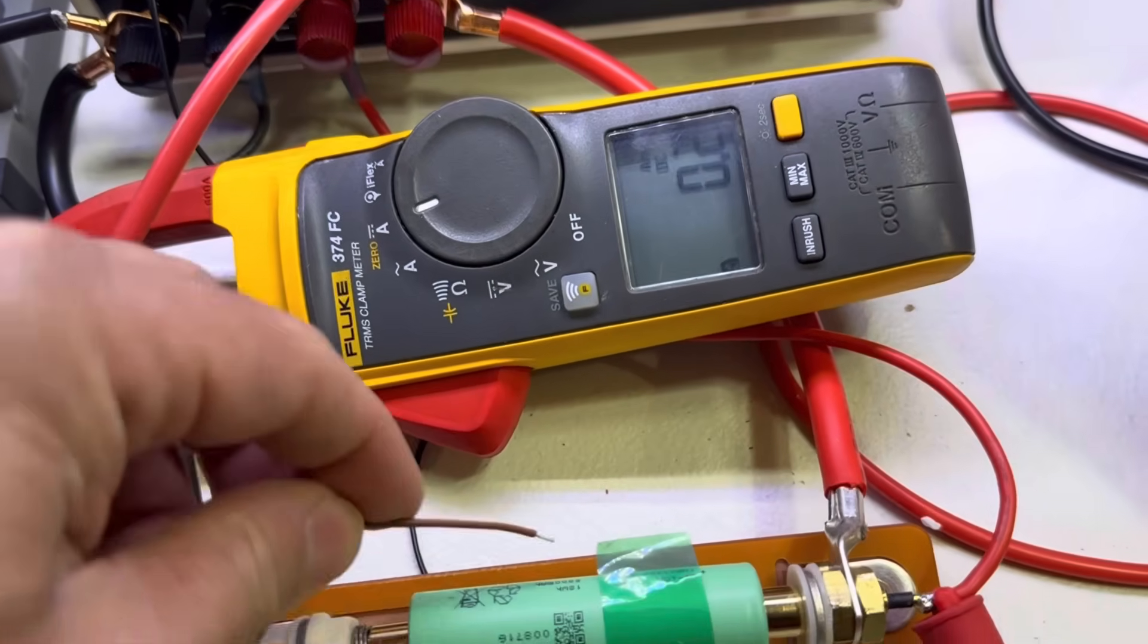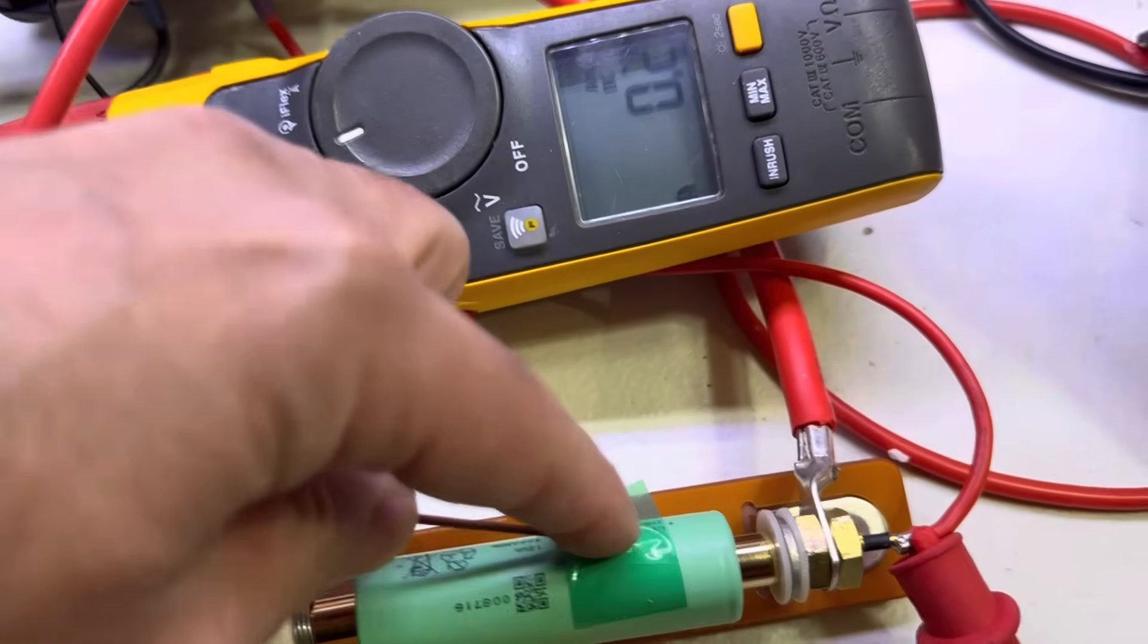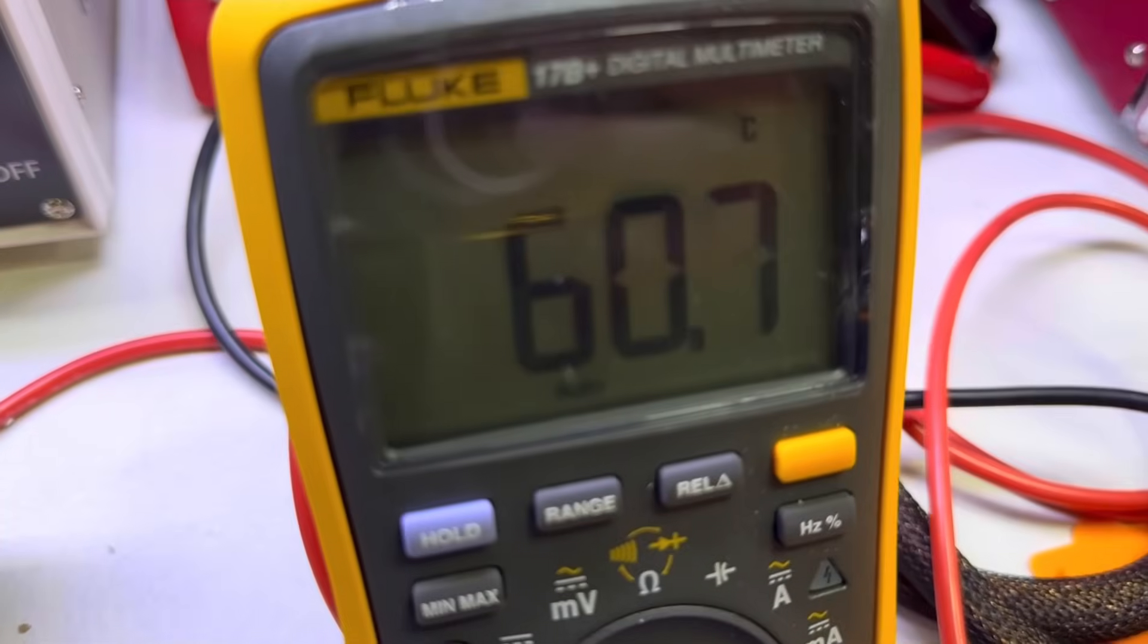But it's able to produce, you see the numbers: 120 plus amps. Let's see, I'm touching the cell to check the temperature.